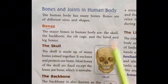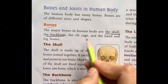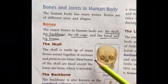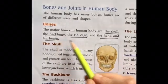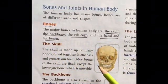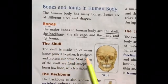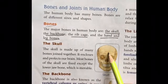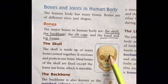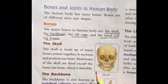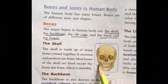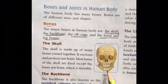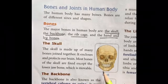Now we will discuss the different bones and joints in the human body. The major bones are the skull, backbone, ribcage, and hand and leg bones. The skull is made up of many bones which protect our brain. All bones in the skull are fixed except the jaw bone — only the jaw bone can move; all other skull bones are not movable.